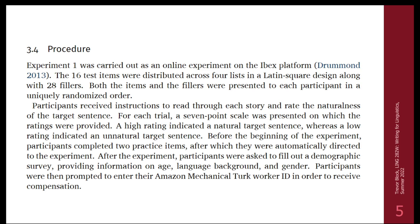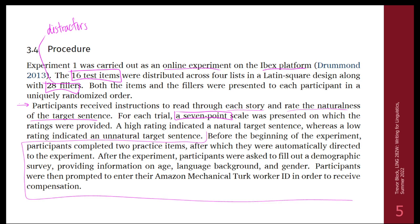The procedure is where all of this is laid out. It was carried out as an online experiment on IBEX. There are 16 test items — sentences being tested for this phenomenon — and 28 fillers. Fillers are distractors; they're there to disguise what you're trying to test so participants don't get the idea and start manipulating their own results, whether consciously or subconsciously. Participants received instructions to read through each story and rate the naturalness of the target sentence on a seven-point scale, followed by practice items and surveys.